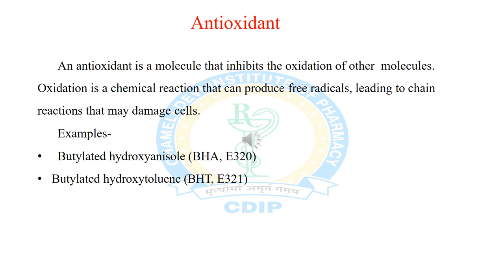The next additive is antioxidant. During storage of emulsion, fats such as vegetable oil or animal oil, and some emulsifying agents like wool fat, are oxidized by atmospheric oxygen. This can be avoided by using antioxidants. An antioxidant is a molecule that inhibits the oxidation of other molecules. Oxidation is a chemical reaction that can produce free radicals, leading to chain reactions that may damage the cells. Examples include butylated hydroxyanisole (BHA) and butylated hydroxytoluene (BHT).